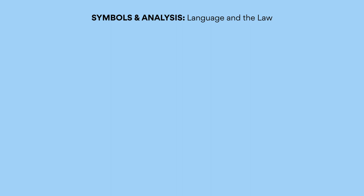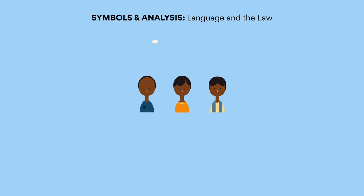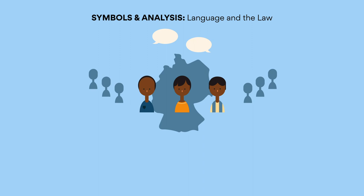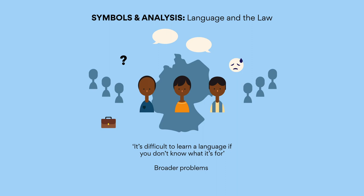Symbols and analysis. Let's talk about language and the law. Many of the barriers faced by the refugees are reflected in their relationships with language — that is, their experiences learning German mirrors and sheds light on their relationship with other elements of German society. For example, there are times when they struggle to concentrate on learning. It's difficult to learn a language if you don't know what it's for. This struggle reflects and symbolizes the broader problems of uncertainty, unemployment, and powerlessness in the men's lives. The symbol of language often intersects with the symbol of the iron law, so these are discussed together here.